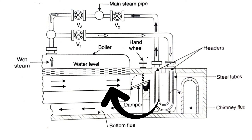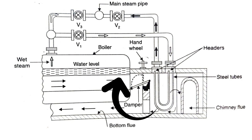A balance damper is provided in the superheater to prevent overheating of the superheater tubes. This damper is operated by a handle — by turning the damper upward into the vertical position, the gases pass directly into the bottom flue without passing over the superheater tubes. By placing the damper in an intermediate position, part of the gases will go over the superheater tubes and the remaining will pass directly to the bottom flue, allowing varying degrees of superheat to be obtained.